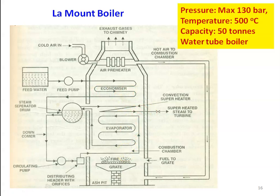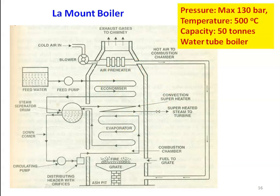As the gas flows upward, first the evaporator absorbs the heat energy. The evaporator is the device which converts water into steam. Then the steam goes to the superheater where it is superheated using the heat energy. Then the gases go to the economizer, where the heat is utilized for heating the incoming feed water. So, the economizer is used for heating incoming water.